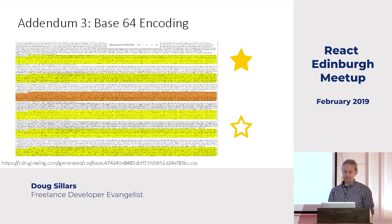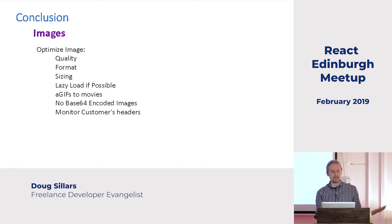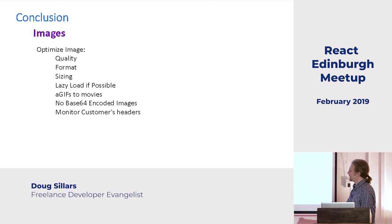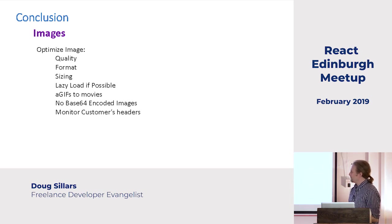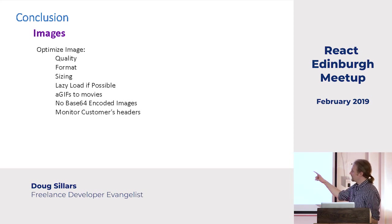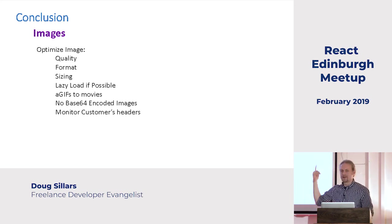In conclusion, there are a lot of things we can do to optimize the delivery of images over the network. If we can make them smaller but still look beautiful, our customers don't know — it just looks faster. We can change quality, format, and sizing. We can lazy load images that aren't on screen. Turn your animated GIFs into movies. Don't Base64-encode your images. And monitor your customers' headers — if they're saying don't send me a lot of stuff, don't send them a lot of stuff.